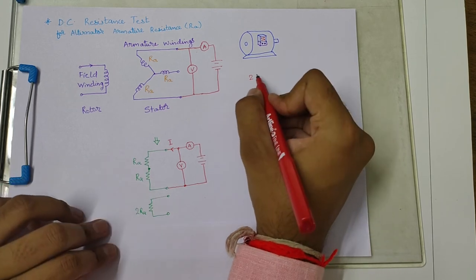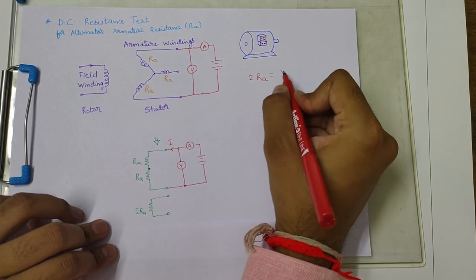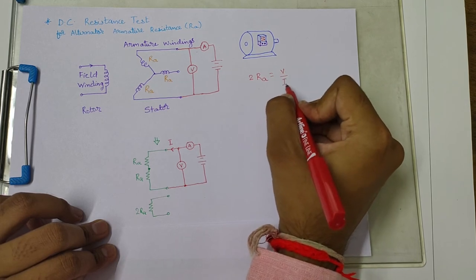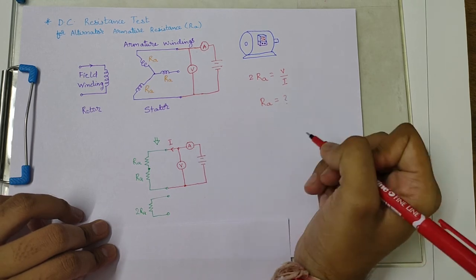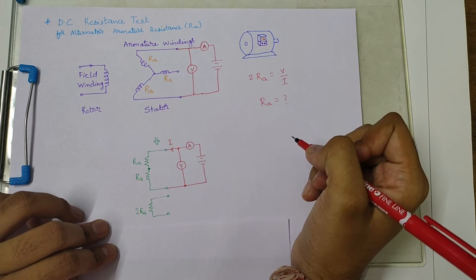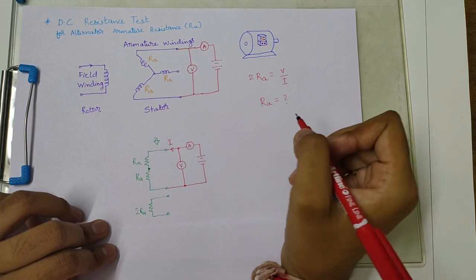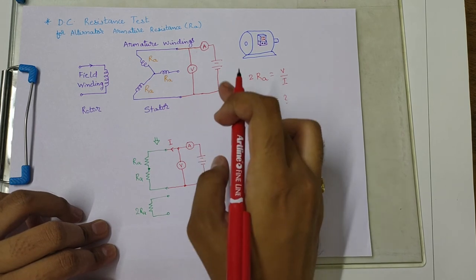So by applying Ohm's law in this circuit, we can write 2RA is equal to voltage divided by current, and thus we can calculate the value of RA using this method.